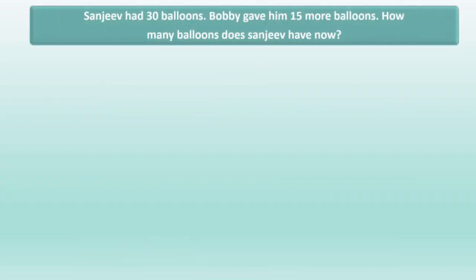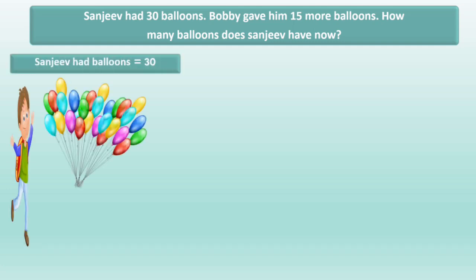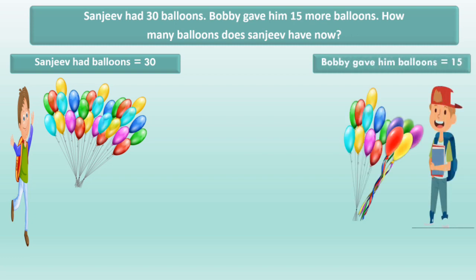Sanjeev had 30 balloons. Bobby gave him 15 more balloons. How many balloons does Sanjeev have now? Sanjeev had 30 balloons. Bobby gave 15 more balloons. So we will find the number of balloons Sanjeev has now. We will add 30 and 15.